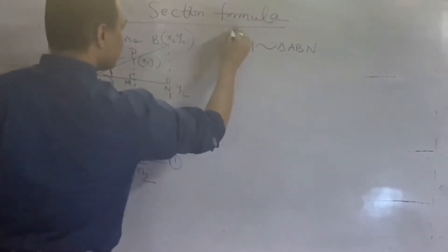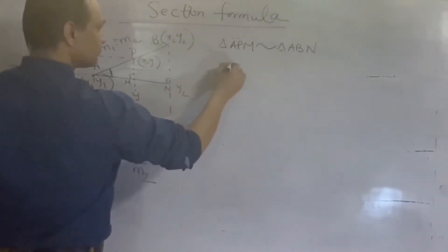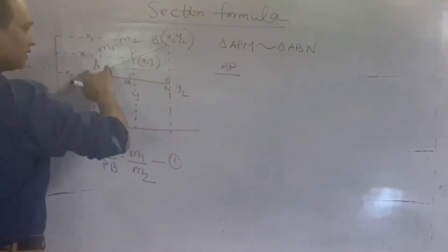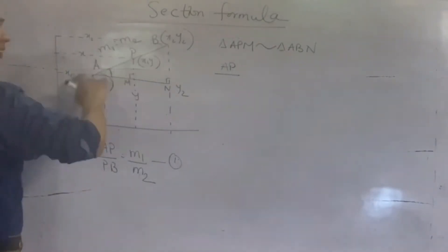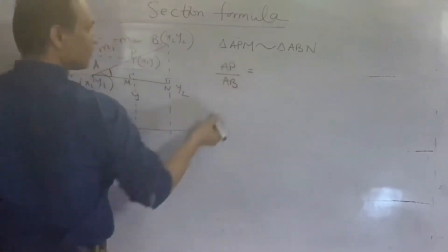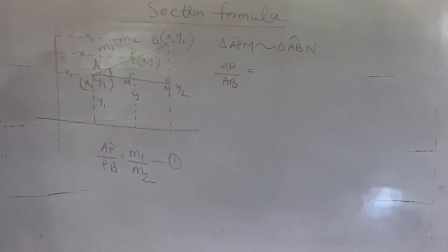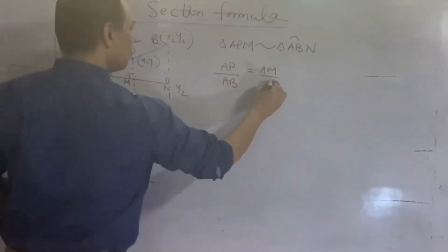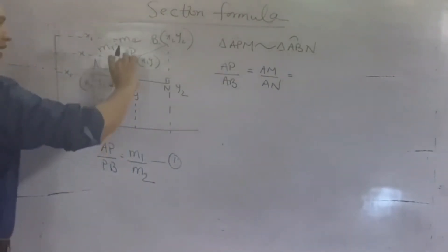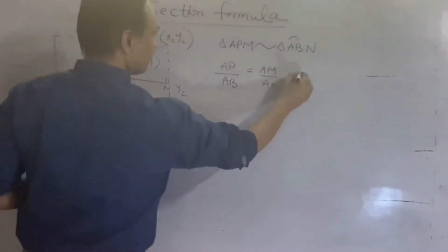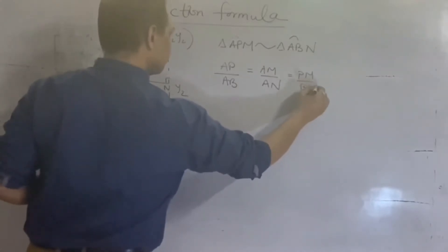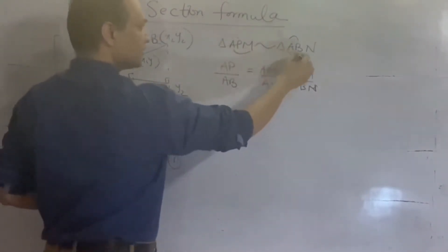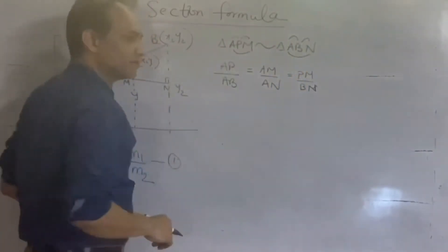Similar triangles की property ये होती है कि जब दो triangles similar होते हैं तो उनकी sides equal नहीं होती, पर उनका ratio बराबर होता है। Corresponding sides लेनी हैं। जैसे AP upon AB, ये ratio बराबर होगा AM upon AN के, और ये बराबर होगा PM upon BN के। Triangle का नाम सही देना जरूरी है — angle A दोनों में common था तो A पहला alphabet, angle P और angle B corresponding हैं तो P के सामने B, M और N दोनों 90° थे।